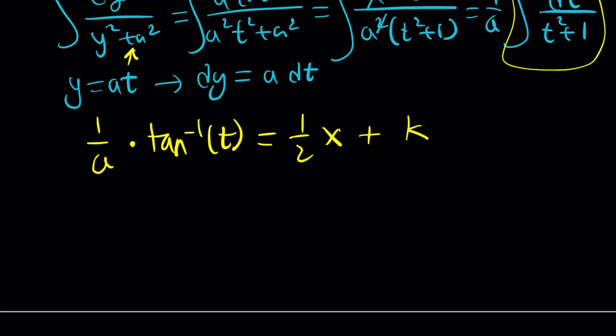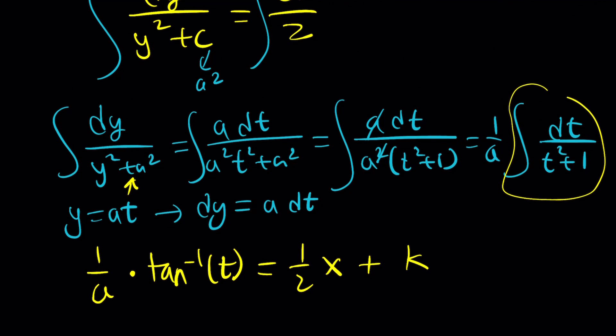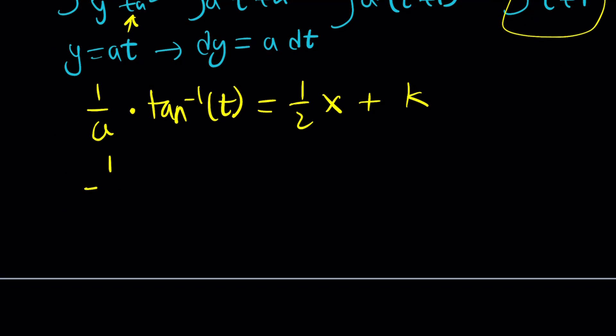So, this is my expression about what is t and what is a. Let's go back and find out. C is a squared. So, can I safely assume that a is going to be the square root of c? With a plus minus sign. But that's a constant. Come on, we can keep it at square root of c. So, this is going to be 1 over square root of c times tan inverse of t. And by the way, t is y over a from here. But a is square root of c. So, we can write the t as y over square root of c. Make sense? And that equals 1 half of x plus k.